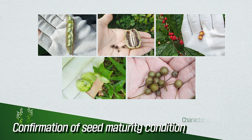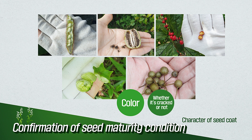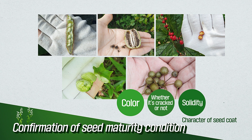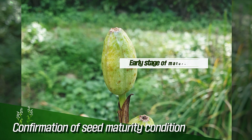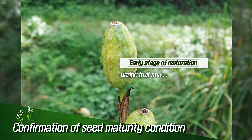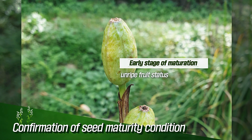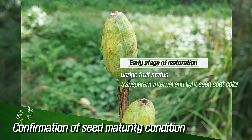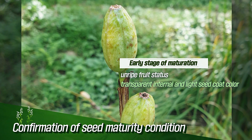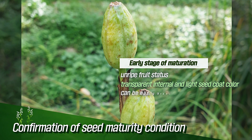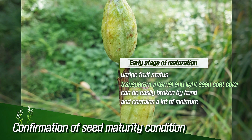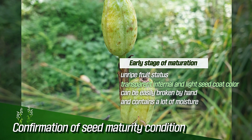To confirm the maturity level of fruit or seed, you must observe attributes such as color, cracking, solidity, and dryness of the fruit or seed coat. In the early stage of seed maturation, the fruit is unripe, the inside of the seed is transparent, and the seed coat is light in color. It can easily be broken by hand and contains a lot of moisture.